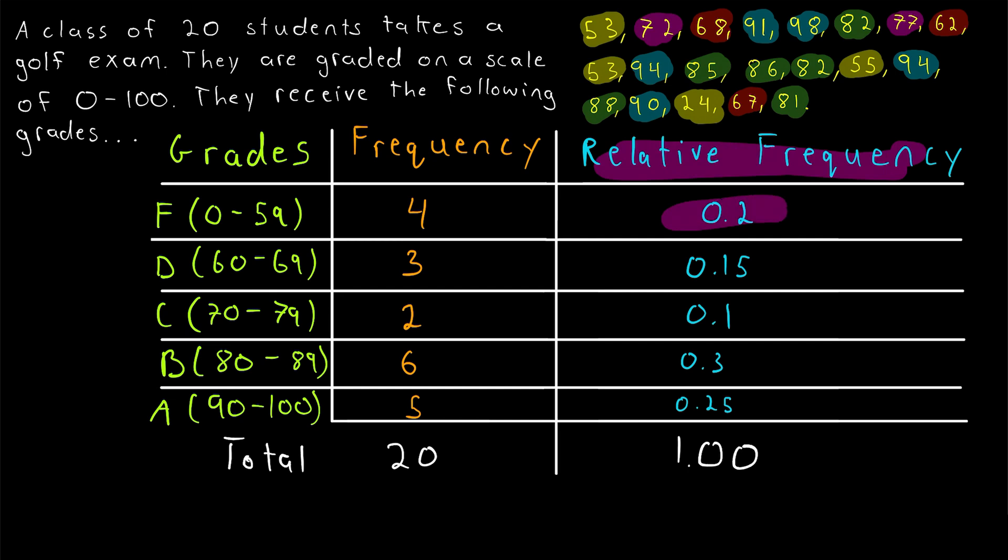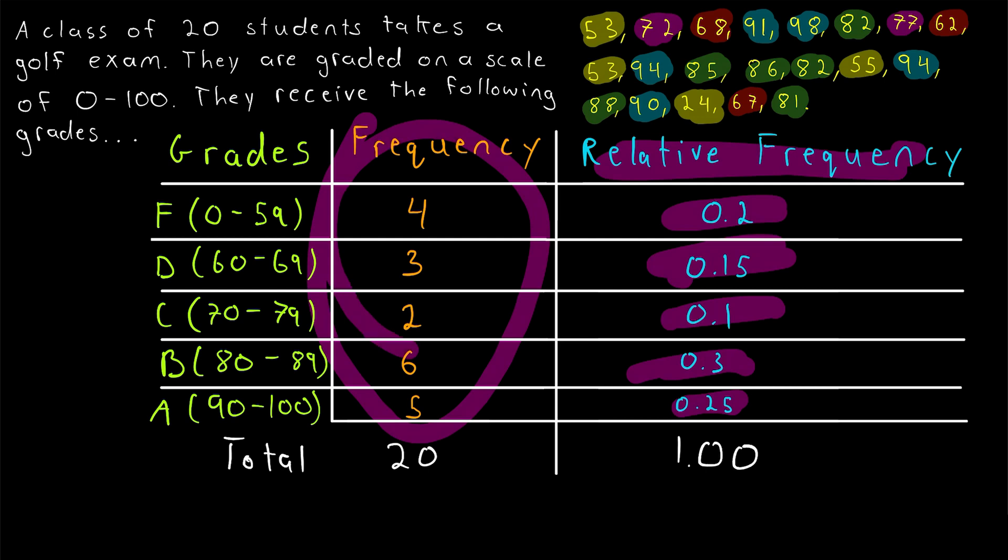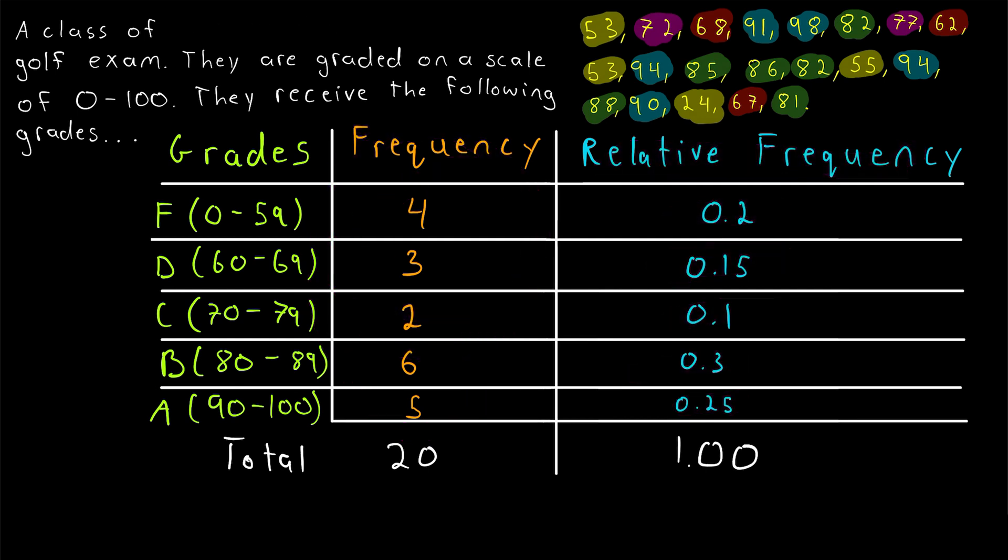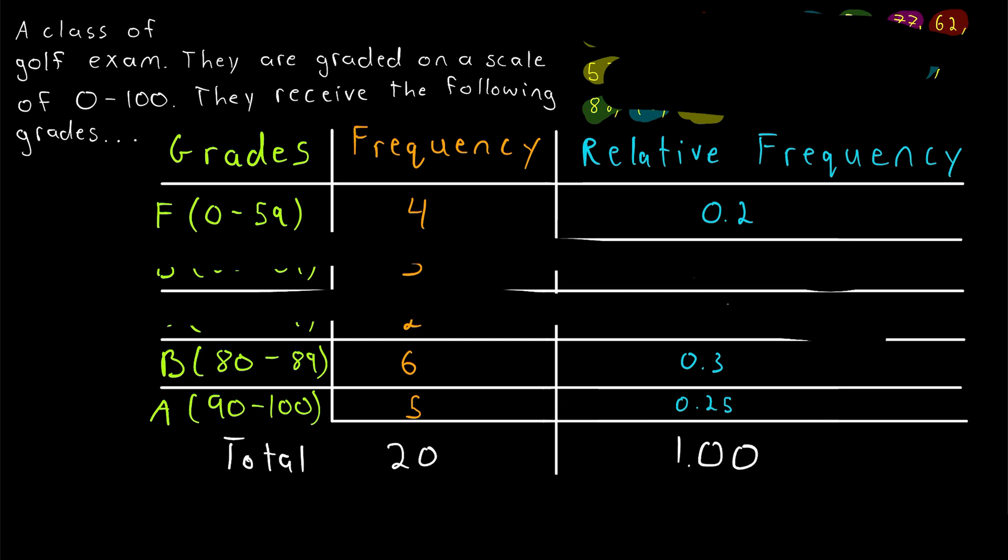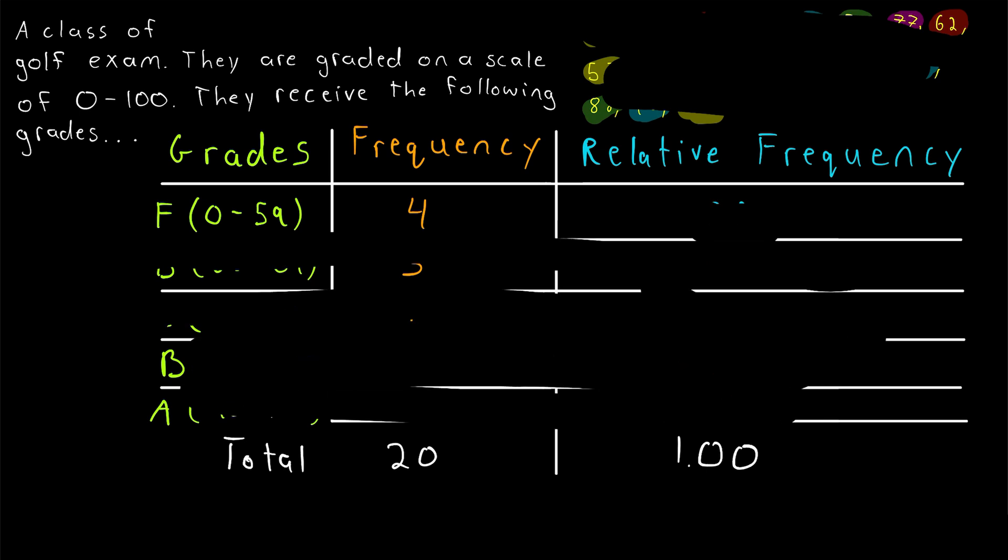So what's the use of a relative frequency table? What's the use of a relative frequency column? Why not just stop with the frequency column? Well imagine you don't know how many students have taken this exam and imagine you don't have any of this other information. Imagine you just have the frequency of F's. You're told some students take an exam, four of them get an F. Is that good or bad? And you should say well I have no idea.